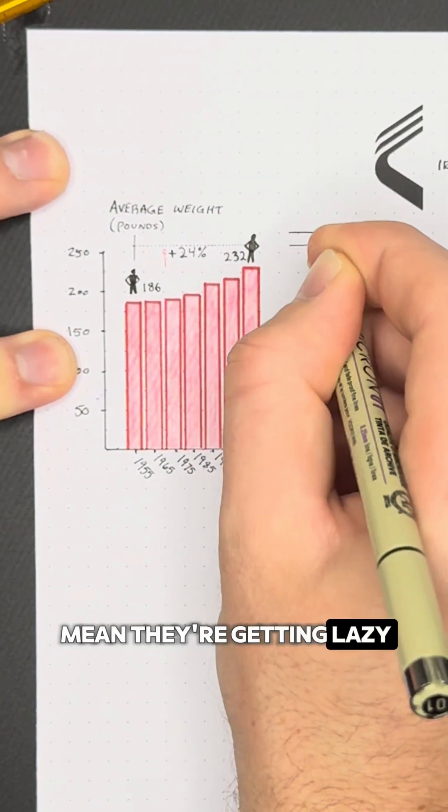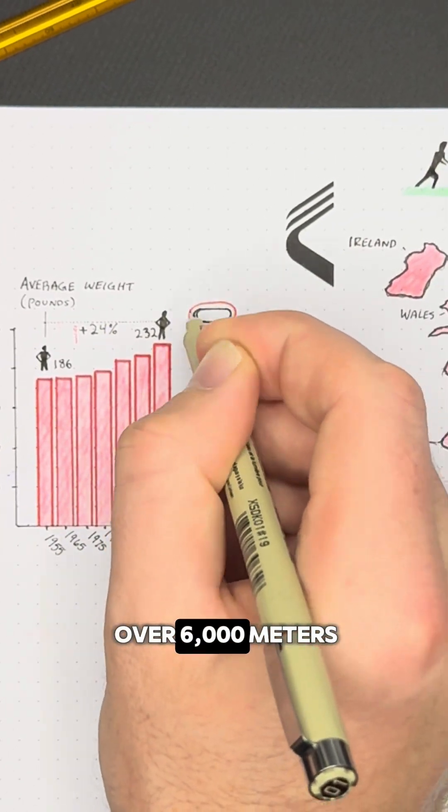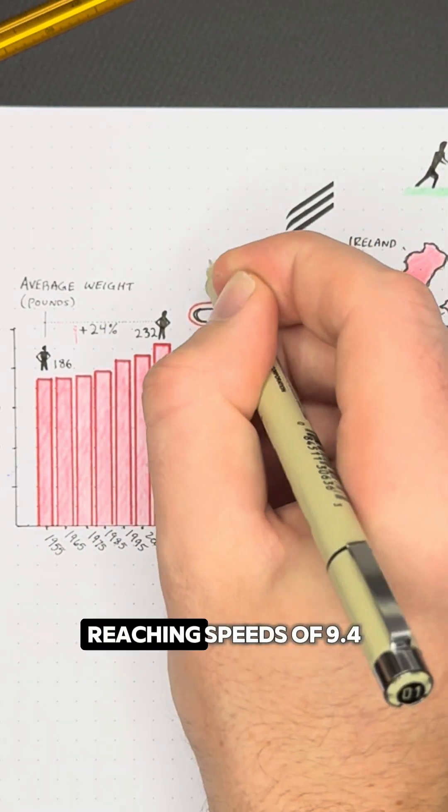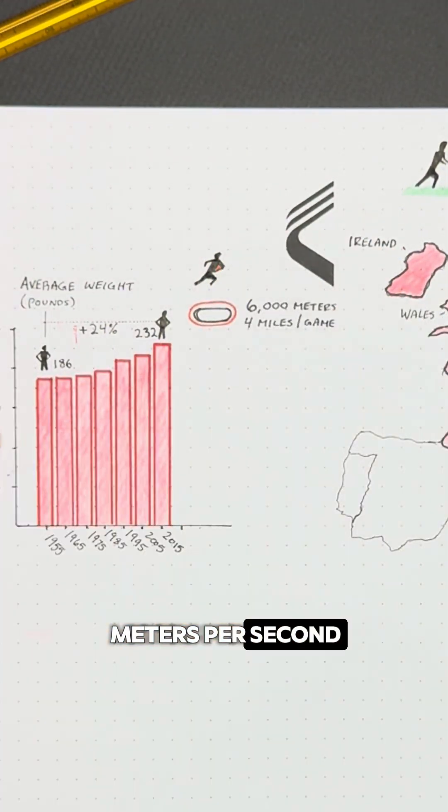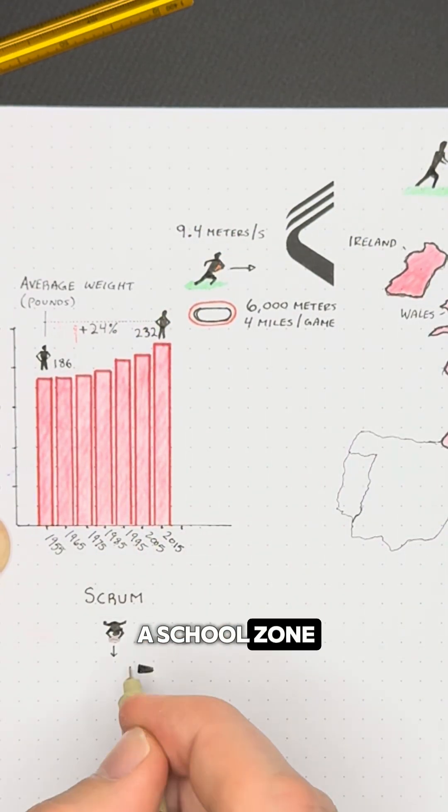And no, that doesn't mean they're getting lazy. These players still cover over 6,000 meters or 4 miles per game, reaching speeds of 9.4 meters per second, fast enough to earn you a speeding ticket in a school zone.